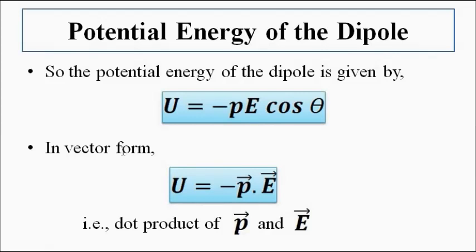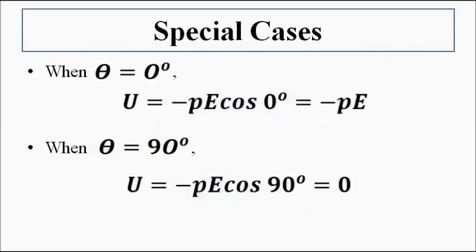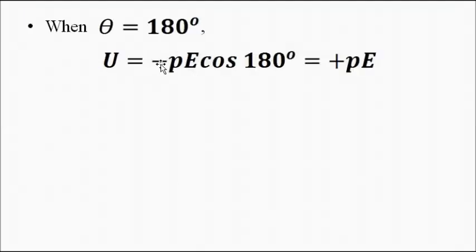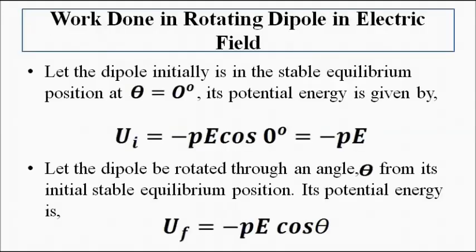Because of the cos theta factor, the potential energy takes different values for different positions of the dipole. When theta = 0°: U = −pE cos 0° = −pE (minimum, most stable). When theta = 90°: U = −pE cos 90° = 0. When theta = 180°: U = −pE cos 180° = −pE × (−1) = +pE (maximum, most unstable). These are the key cases for potential energy values.